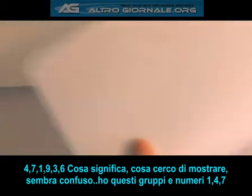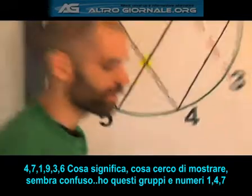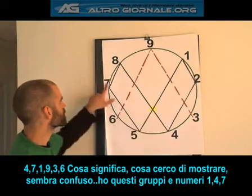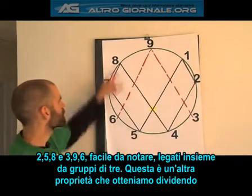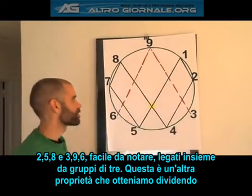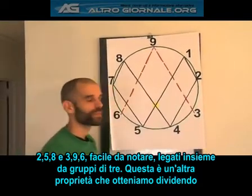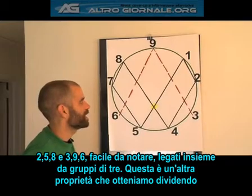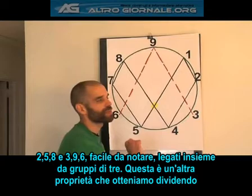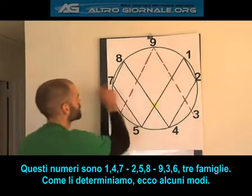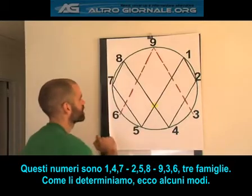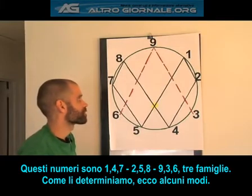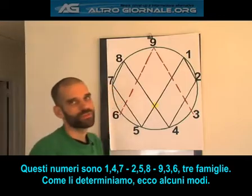What does that mean? It seems a little bit fuzzy — not the same clear sequence we started with. So I have these groups of numbers: 1, 4, 7; 2, 5, and 8; and then 3, 9, and 6, which are easy to see as a group — they were linked together in groups of 3. This is another property we get from this dividing process. They are called family number groups. There are 3 different family number groups. How do we determine them? Let me give you a few ways to do it.